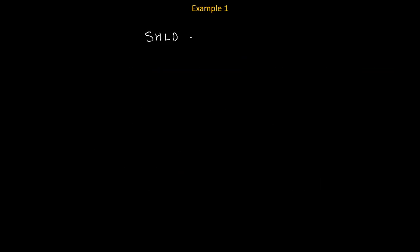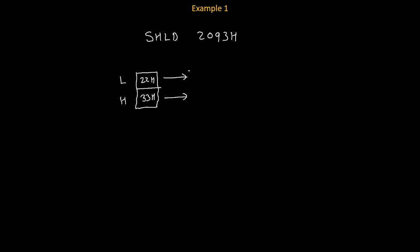Suppose the instruction is SHLD 2093H. Before execution, we need to know the content of the L register and the H register. Suppose the content of L is 22H and the content of H is 33H. These are our before-execution values, and this content will get copied into memory locations.